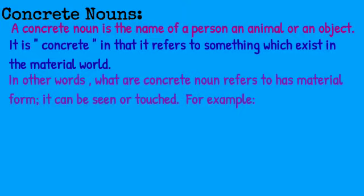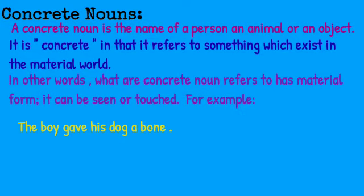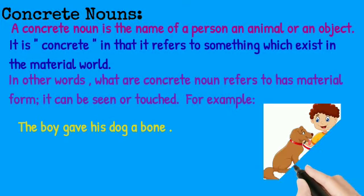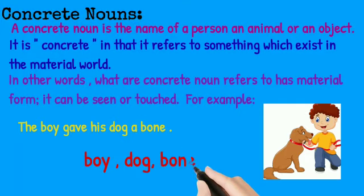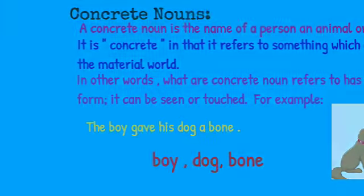Look at this example: the boy gave his dog a bone. In this example, the nouns are boy, dog and bone. And all three nouns are concrete nouns, as you can see the boy, the dog and the bone. So all three nouns — boy, dog and bone — are concrete nouns as you can touch and see these nouns.